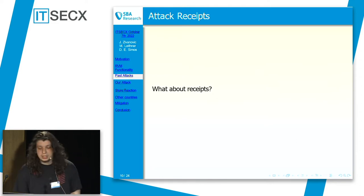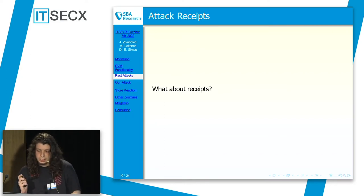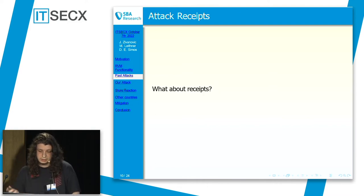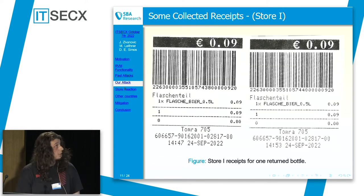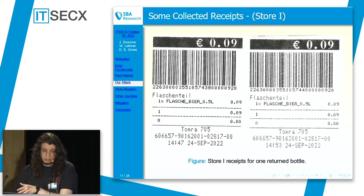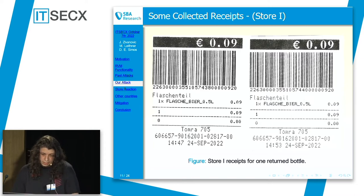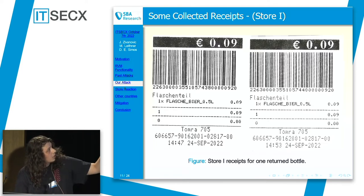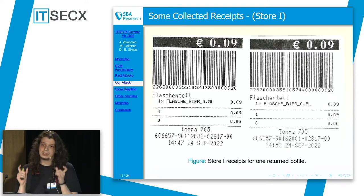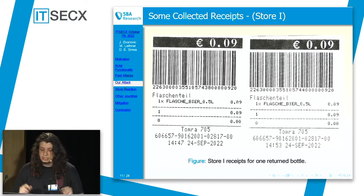There is one more thing you can attack with these machines: the receipt. We collected receipts from three store chains in Vienna. These are from one store — we returned one bottle twice and got these receipts. As you can see in the middle, the numbers under the barcodes do not match. They are different, which is generally good.